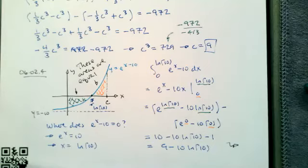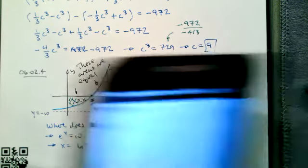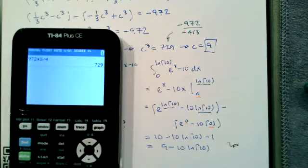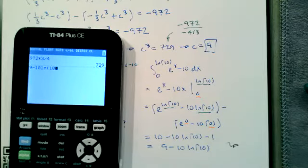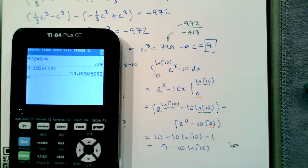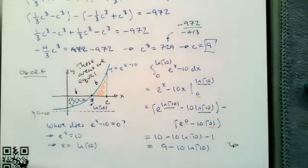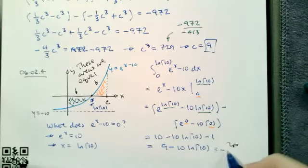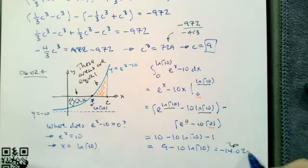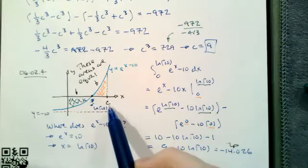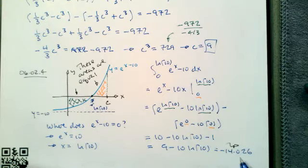That's the green area. Let's approximate what this is so we have some context. It comes out to approximately negative 14.026. So what I want is to integrate from natural log of 10 to c and come up with positive 14.026.